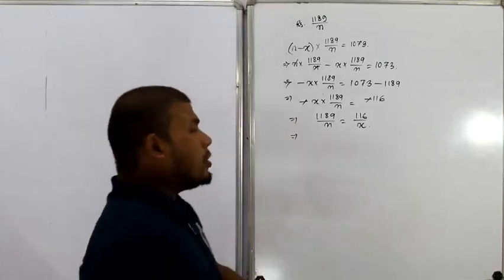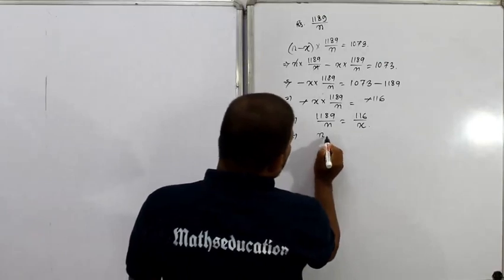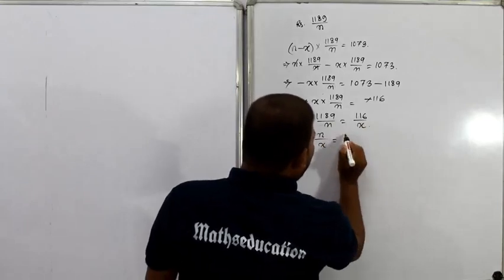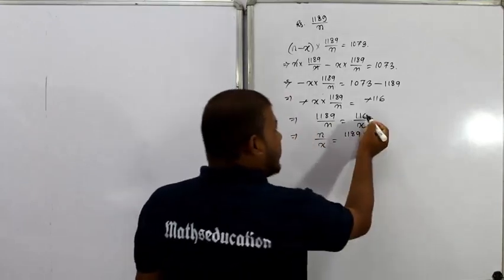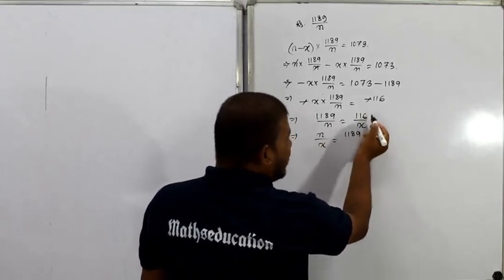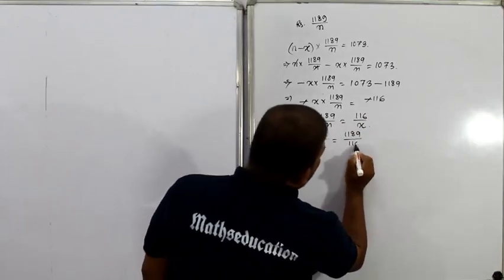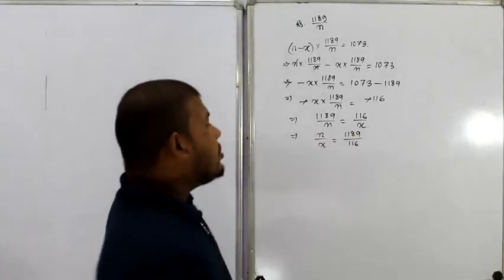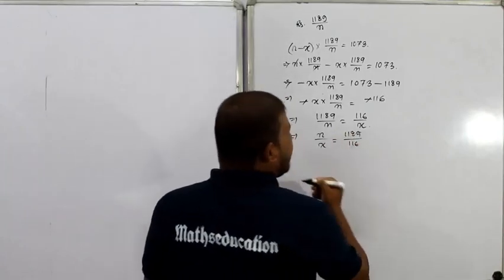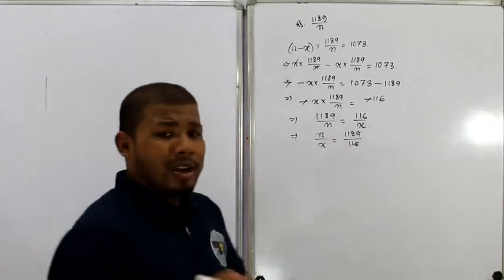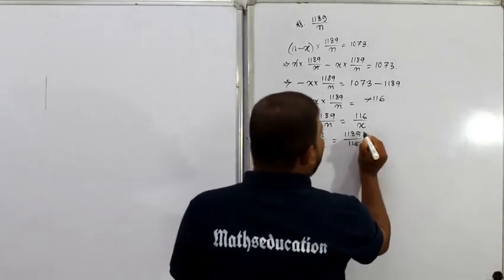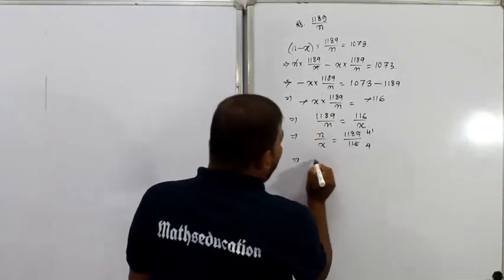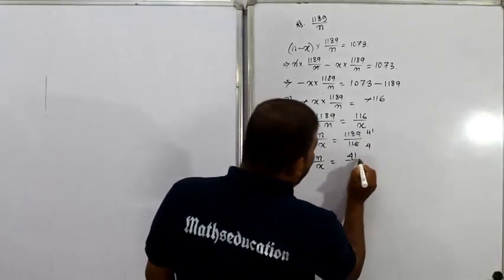Finally, from the variable side: 1189 divided by n equals 116 divided by x, which gives us n divided by x. If you divide, the ratio will simplify. Looking at the simplified form — dividing 1189 and 116 by 29 — we get 41 and 4 respectively. So finally, n divided by x equals 41 by 4.